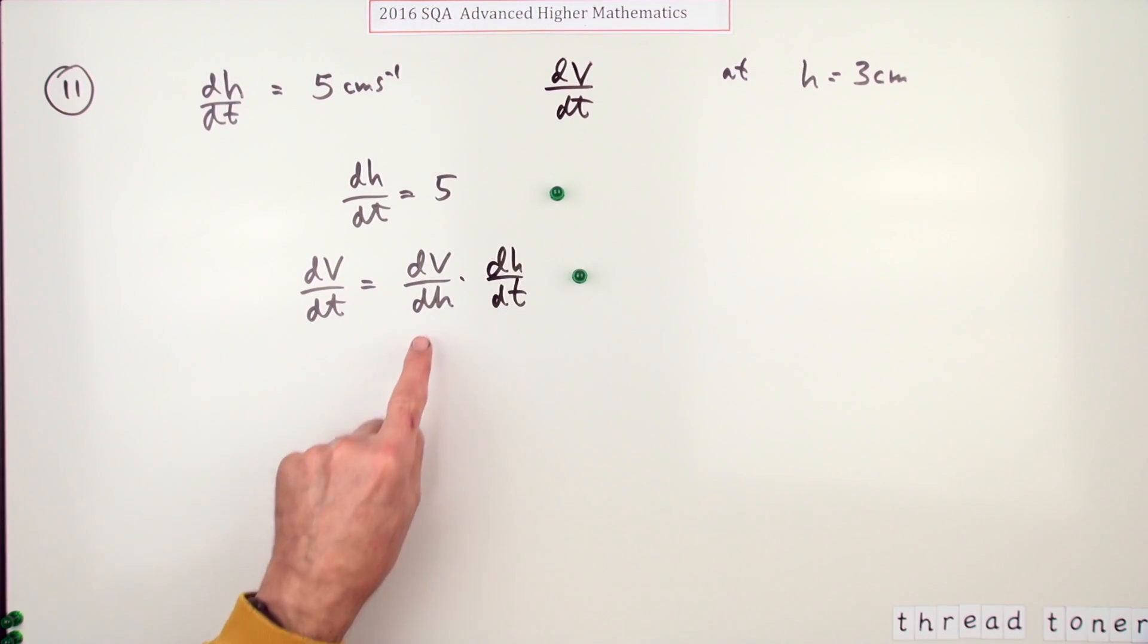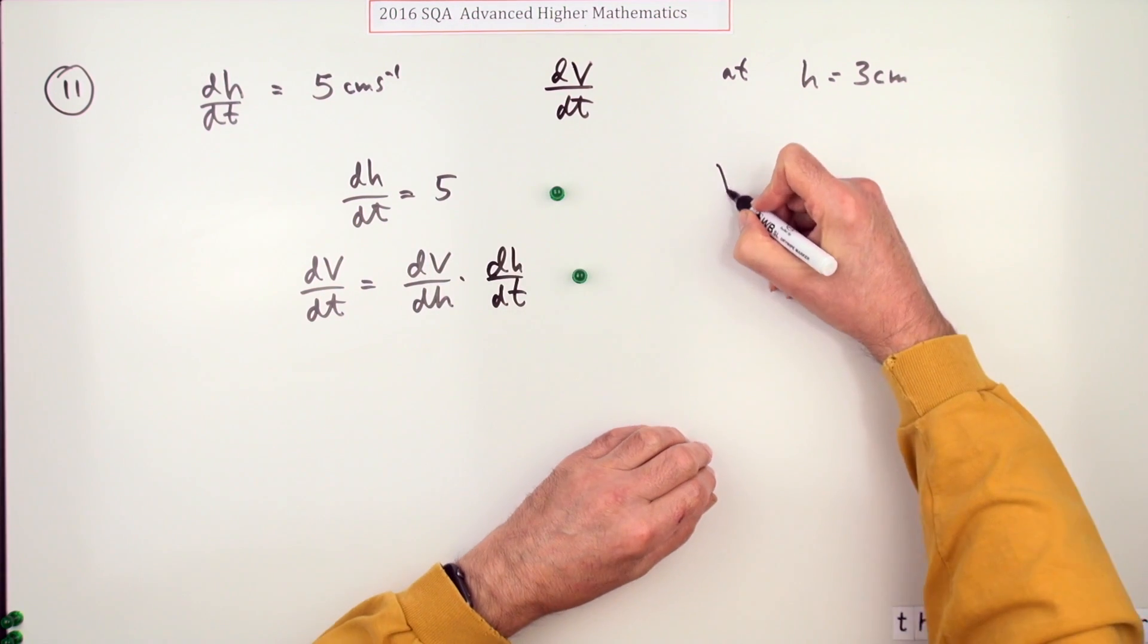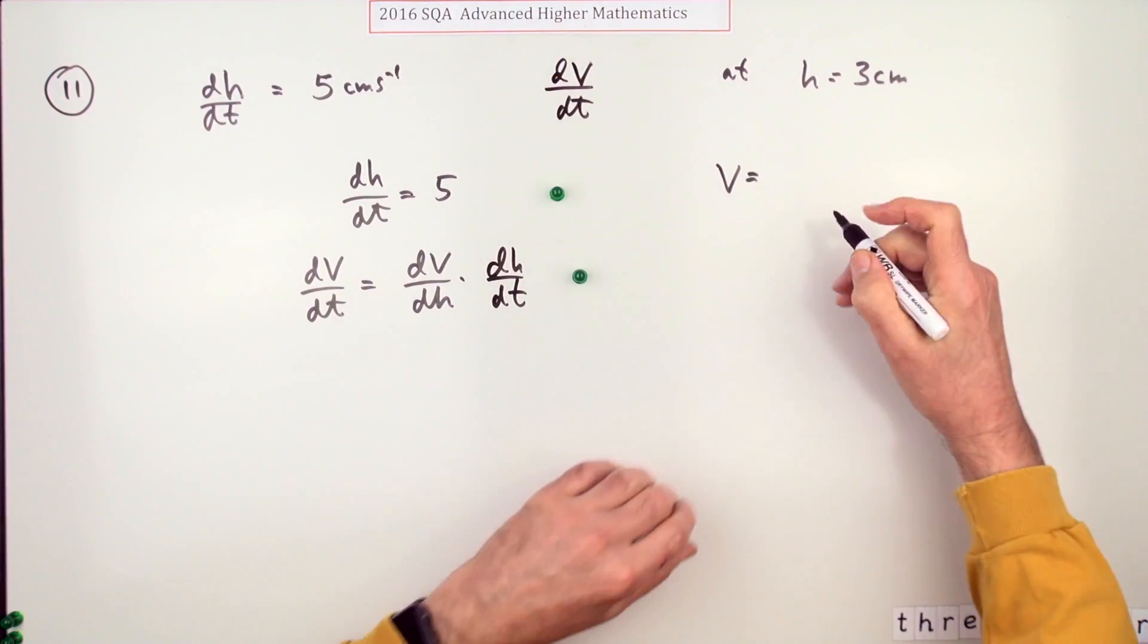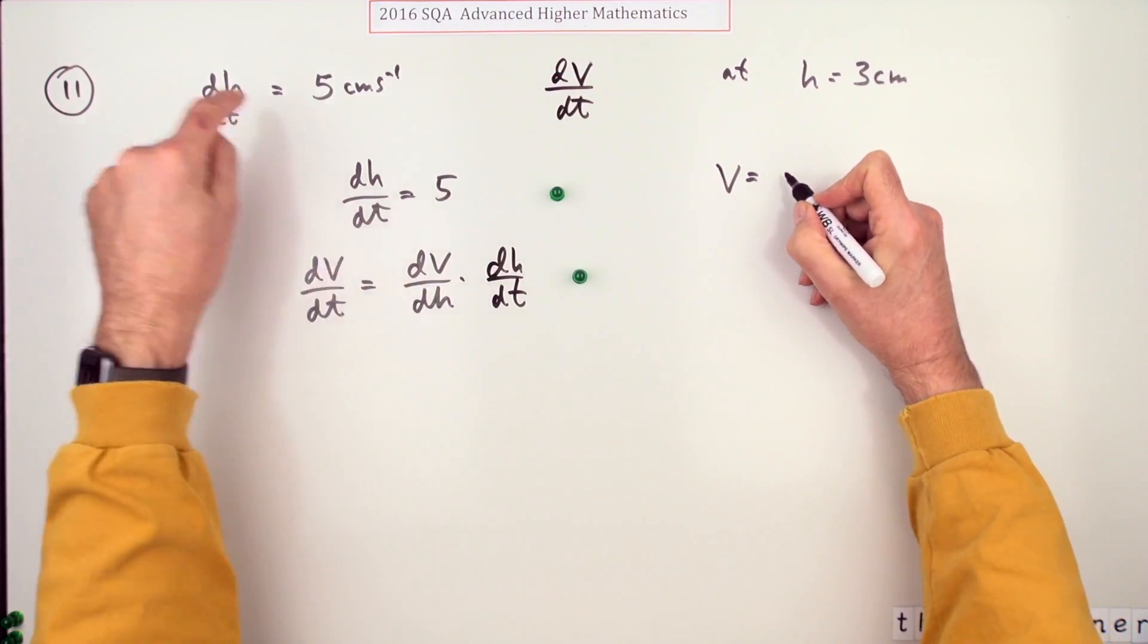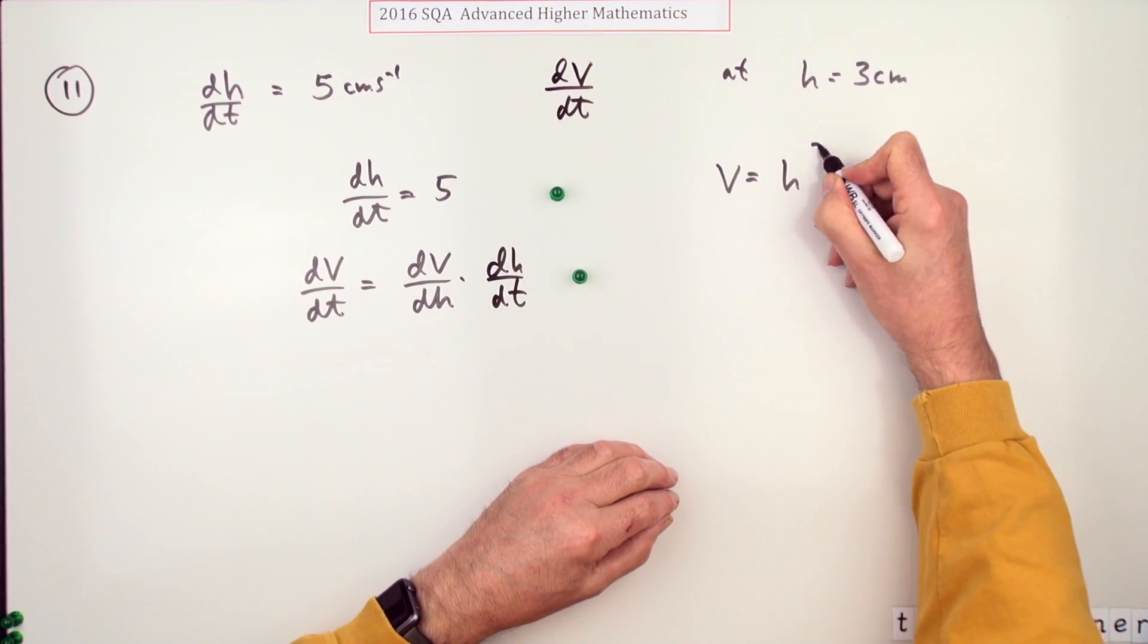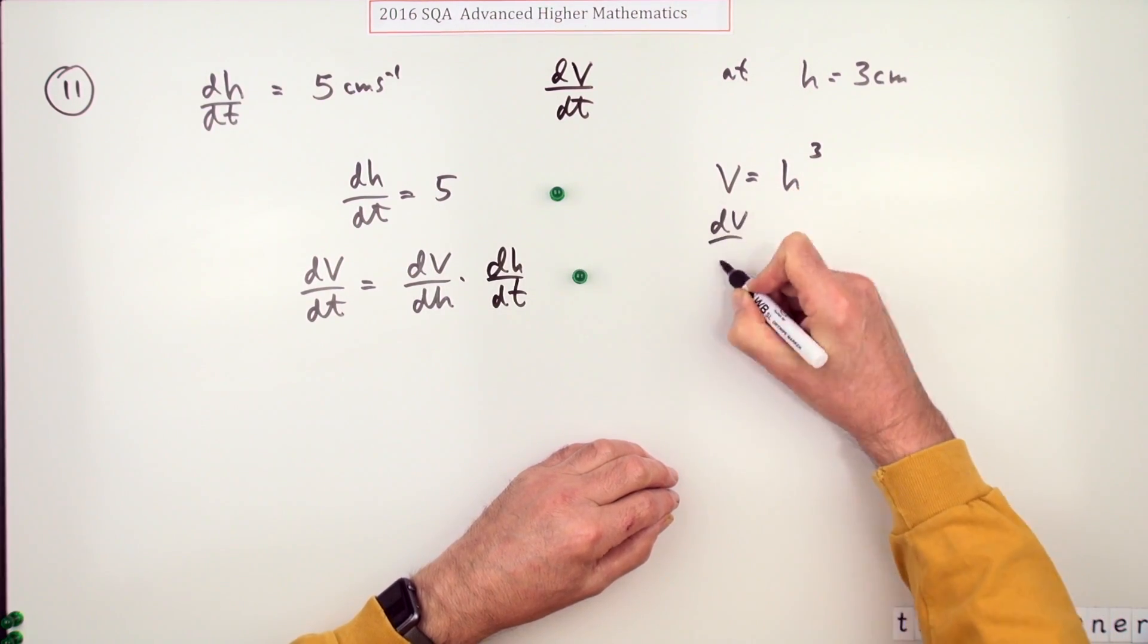So what is this thing? Well, it's a cube, and in a cube all the sides stay the same. The height will be increasing but all the sides are increasing the same amount, so that means each of the sides has been called h in this case. So V is h cubed, so dV/dh is going to be 3h squared. That gets you a mark.